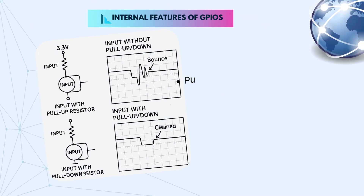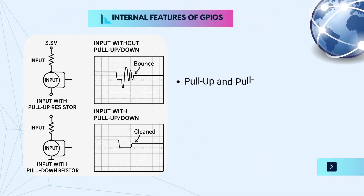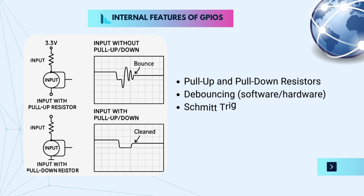GPIOs aren't just simple wires. Inside, they often have built-in features that make them more powerful: pull-up and pull-down resistors, de-bouncing (software/hardware), Schmitt trigger inputs, and interrupt capabilities.